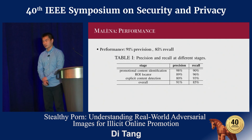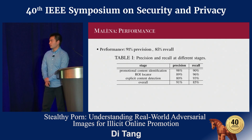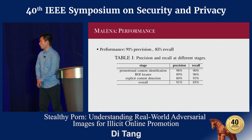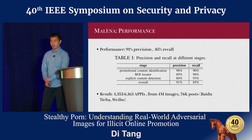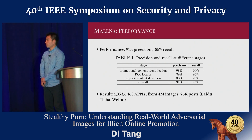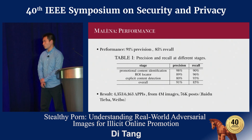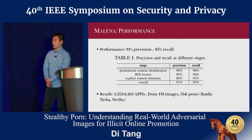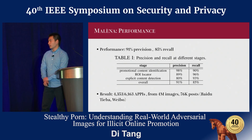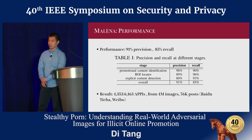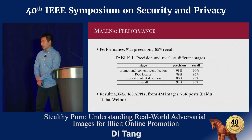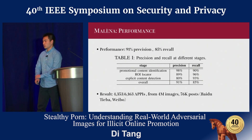MENINA works well on our dataset. It achieves 91% precision and 85% recall. Using MENINA, we found more than 4,000 EPIs that have been manually confirmed. The total dataset contains 4 million images from 76,000 posts from the top two Chinese social networks, Tieba and Weibo. These two networks are huge — Tieba has more than 200 million users and Weibo has more than 400 million users. Our data collection was even, meaning we found EPIs in posts relevant to a range of topics, including posts discussing politics.